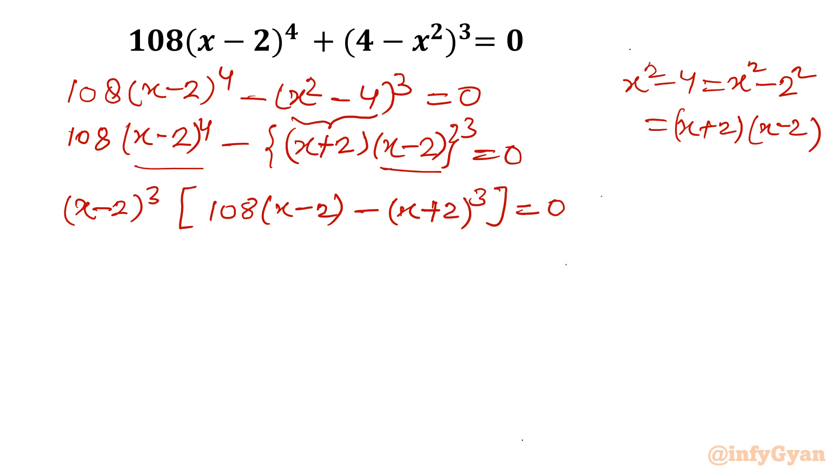Now it is in product, so either (x-2)³ equals 0. This is the first bracket equal to 0. Then this equation implies x equals 2, 2, 2 - three real solutions.